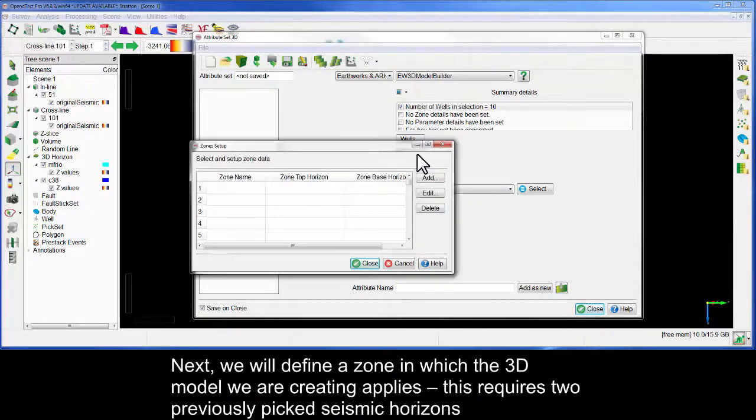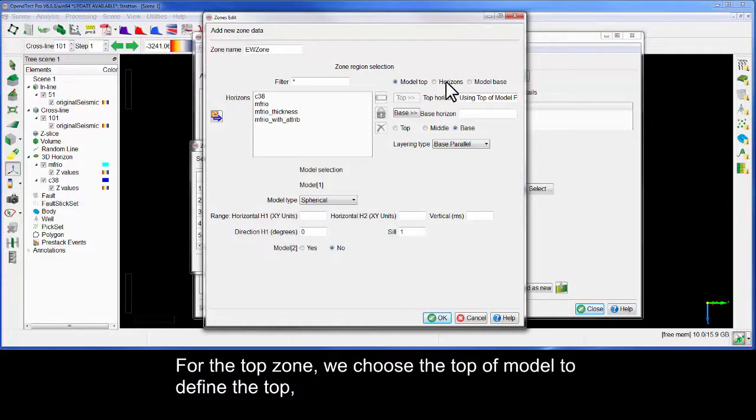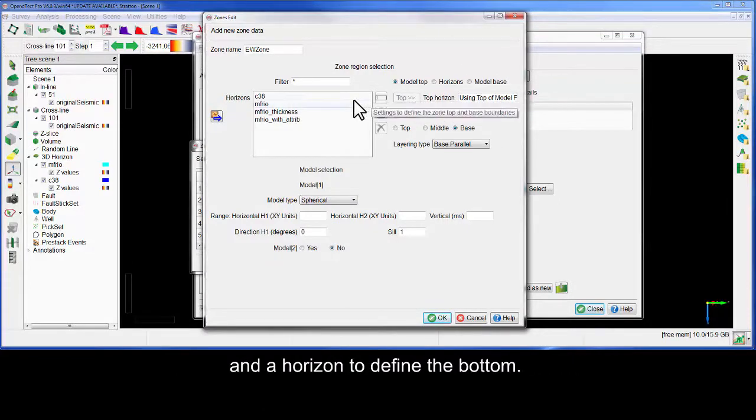This requires two previously picked seismic horizons. For the top zone, we choose the top of the model to define the top, and a horizon to define the bottom.